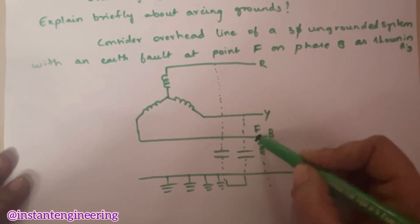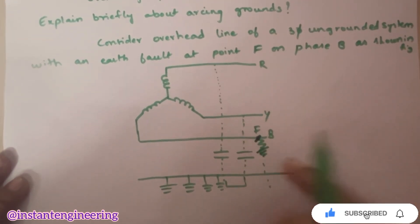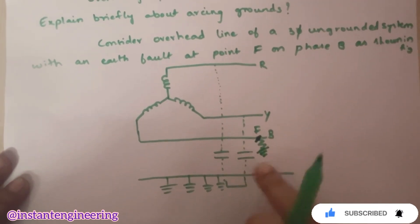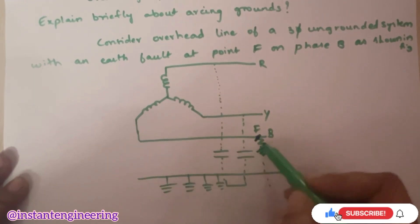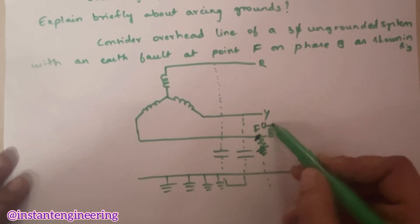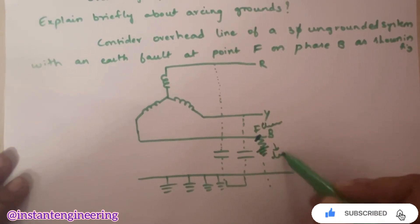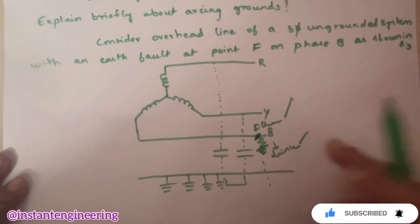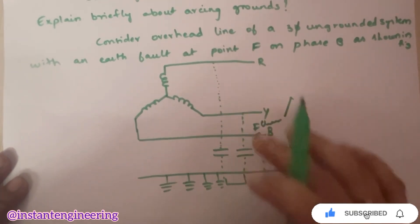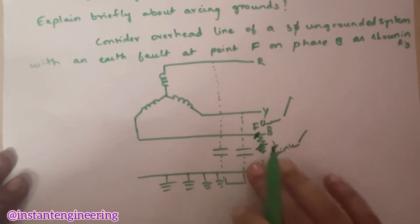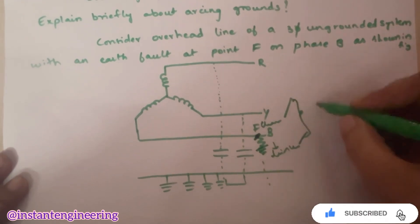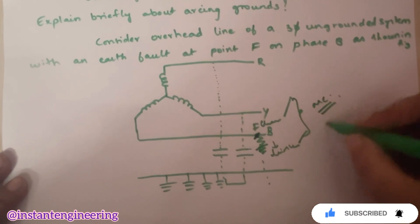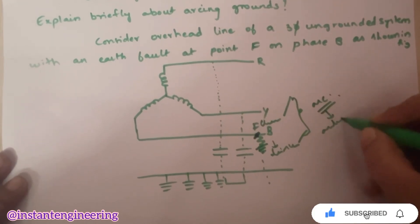That means, it is, the current is discharging to the earth. Again, from here, the conductor will conduct. Again, it will charge. Again, it will discharge here. So, discharging and discharging, which is a continuous process, this continuous charging and discharging of the line to the earth capacitance result in formation of some arcs. That is nothing but arcing grounds.